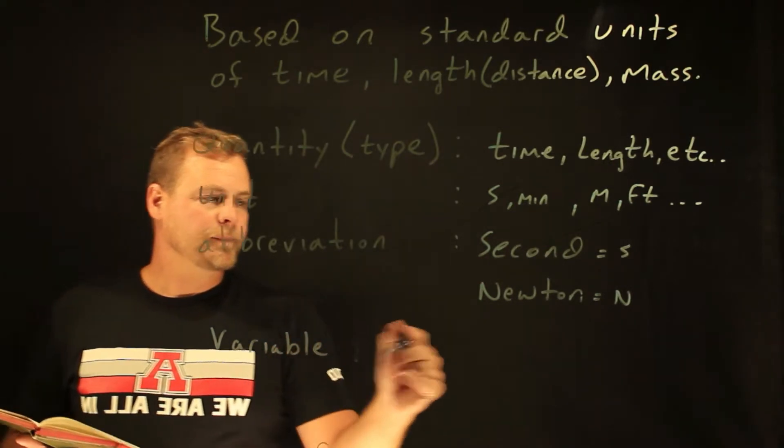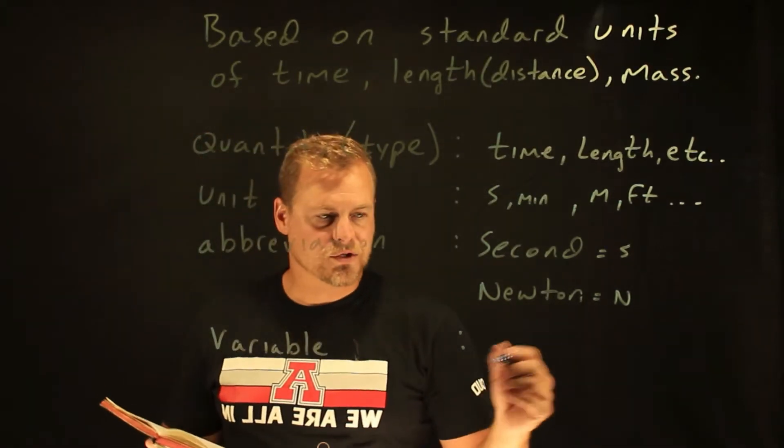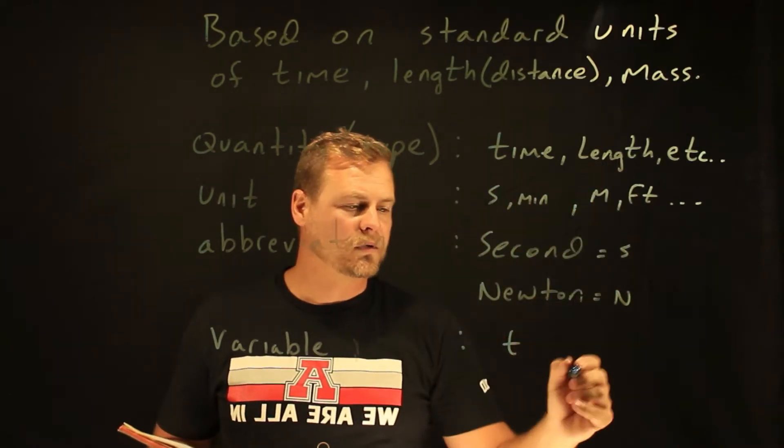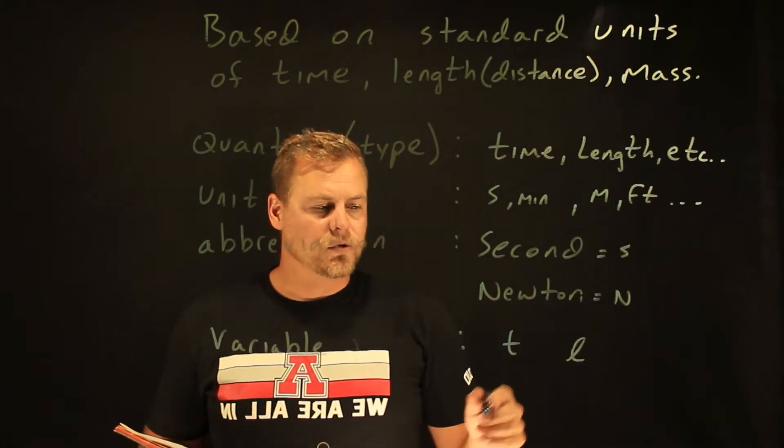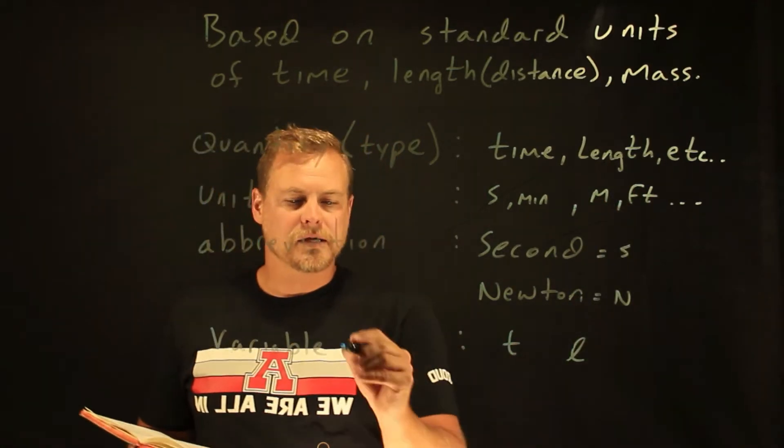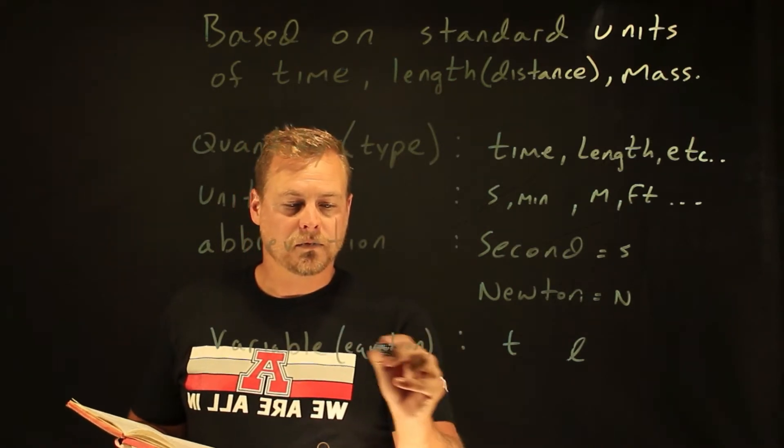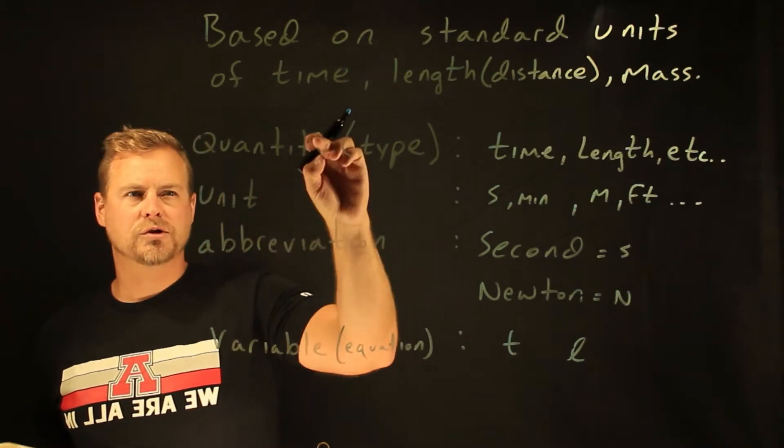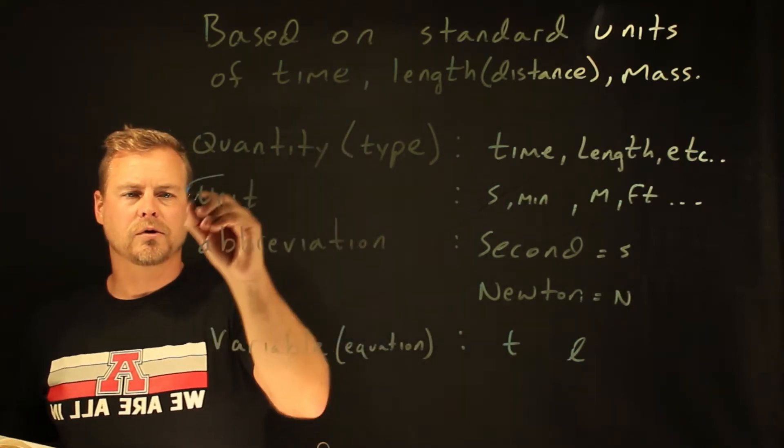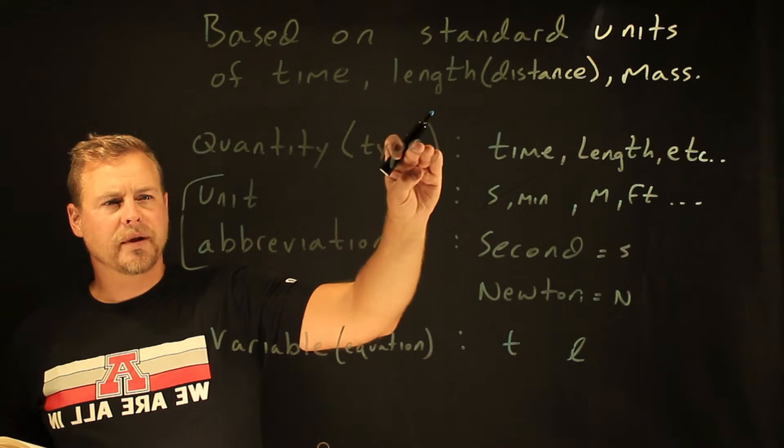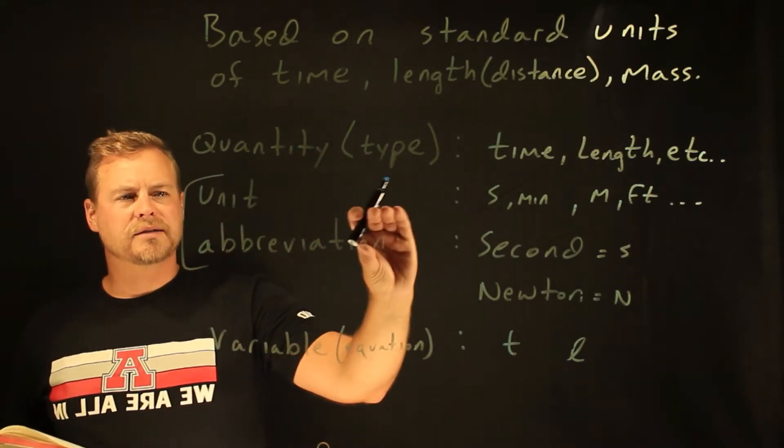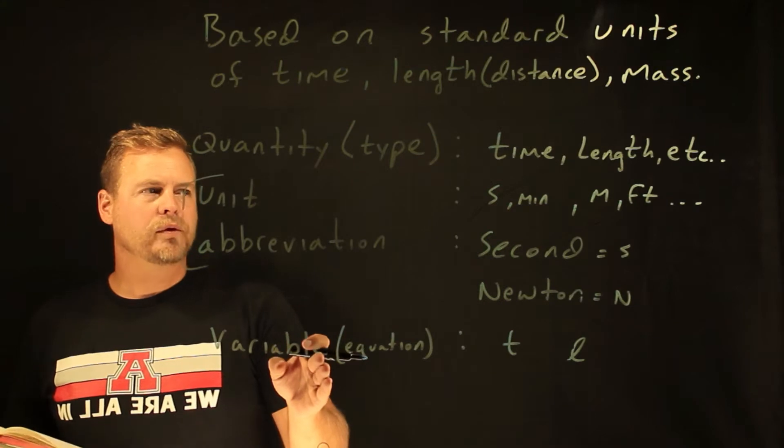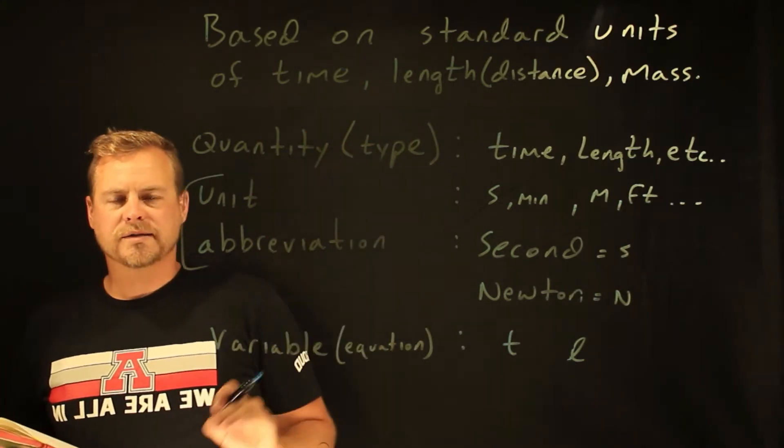The variable is how it looks in an equation. So this is t for time or length for l. And so the variables are what you find in an equation. The units are how you are going to measure that thing. And so you've kind of got, you know, what it is that you're measuring. So I'm going to measure length. The unit is going to be based on the instrument that you're using.